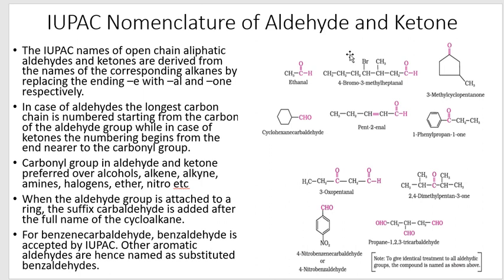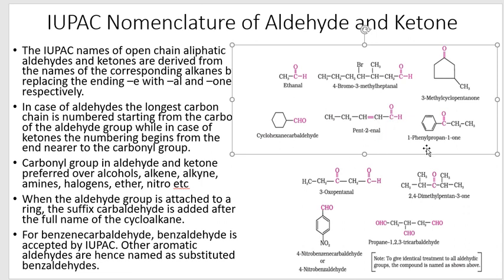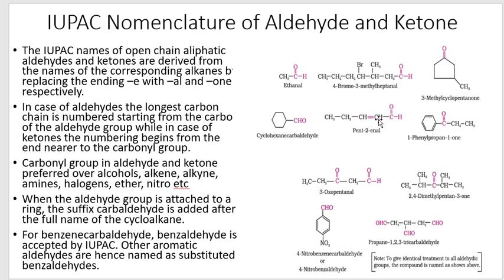For example, if there is an alkene present, we keep the '-en-' and add '-al'. Numbering starts from the CHO carbon because C=O is preferred over the double bond. So for a five-carbon chain with a double bond at C2 and an aldehyde at C1, the name is pent-2-en-al.